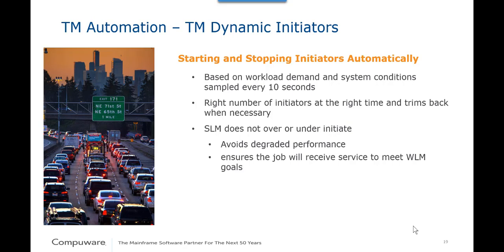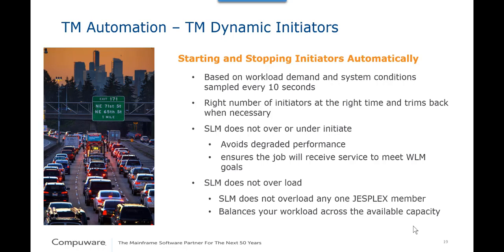Prior to selecting a batch job, Throughput Manager ensures that the current system conditions will allow the job to receive sufficient service to meet the WLM policy goals. This avoids overloading and the resulting inefficiencies. SLM does not overload the system by ensuring capacity is available before starting more jobs. As long as there are no affinity constraints like scheduling environments that prevent a job from flowing to another JESPlex member, the workload has a natural tendency to be fairly balanced across the JESPlex, providing better use of available resources. If a member is down or stressed, the load shifts automatically to the available capacity.